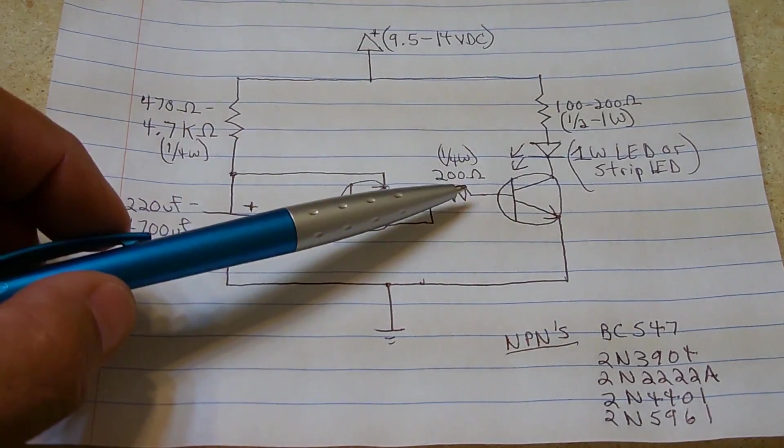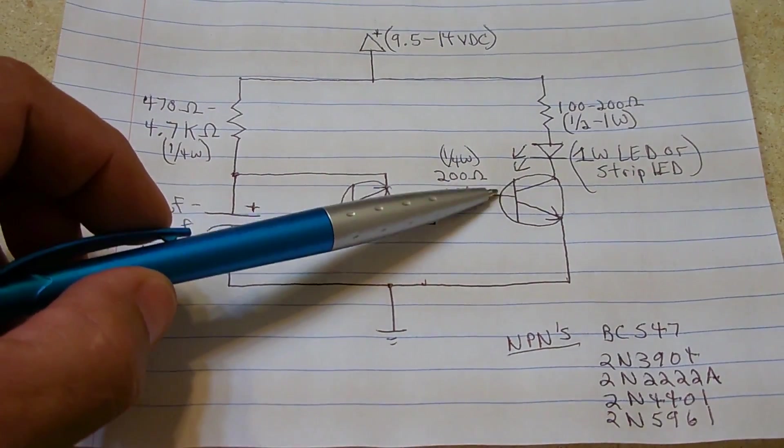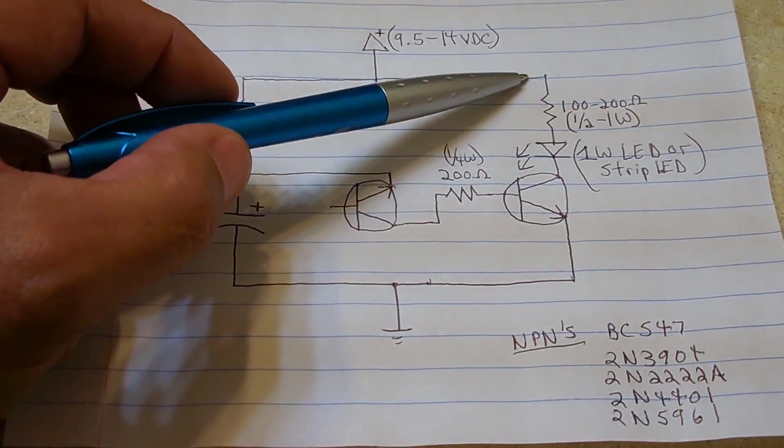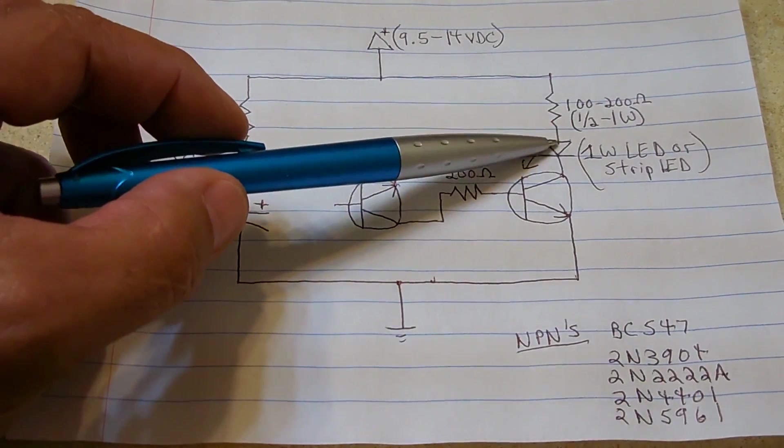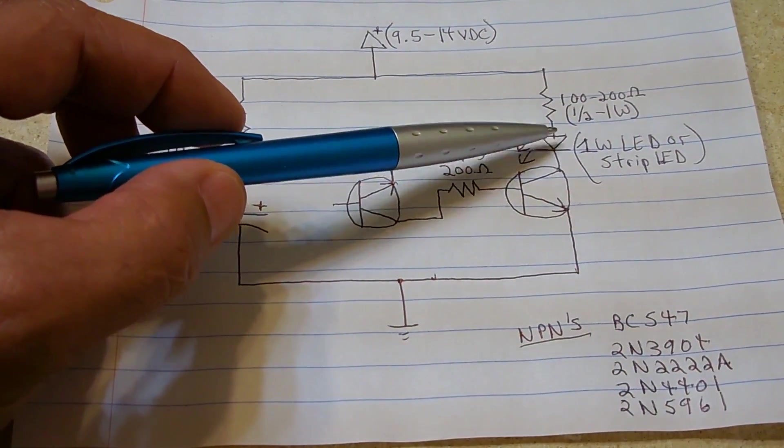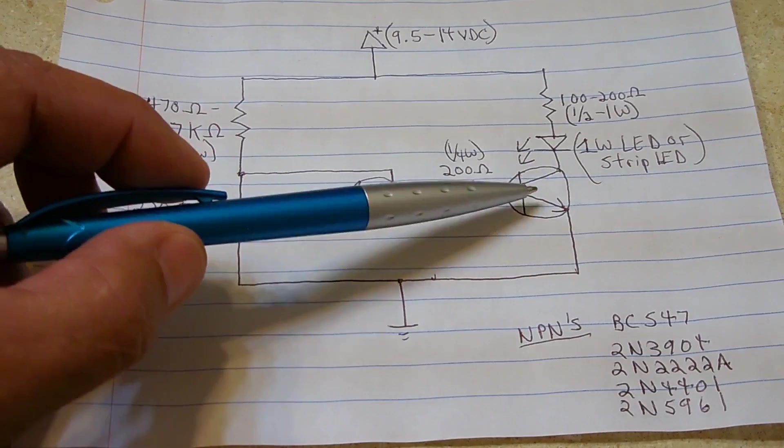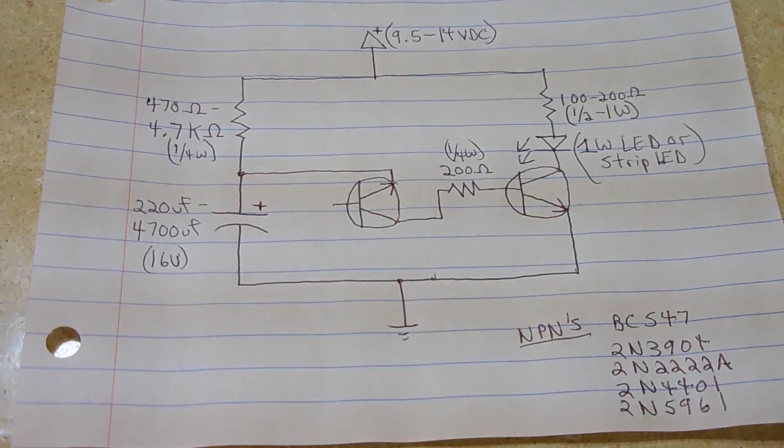It's going to connect to the base of this transistor. So every time that pulse is detected, it's going to turn on this transistor, allowing current to flow through a current limiting resistor into your ultra bright, higher powered LED or strip light. Then it's going to flow into the collector, out the emitter, and to the battery negative.